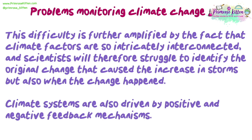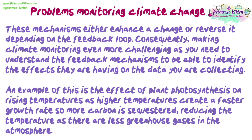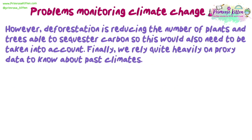Climate systems are also driven by positive and negative feedback mechanisms. These mechanisms either enhance a change or reverse it, depending on the feedback loop — consequently making climate monitoring even more challenging, as you need to be able to understand the feedback mechanisms to identify the effects they are having on the data you are collecting. An example is the effect of plant photosynthesis on rising temperatures: higher temperatures create a faster growth rate so more carbon is sequestered, reducing the temperature as there are fewer greenhouse gases in the atmosphere. However, deforestation is reducing the number of plants and trees able to sequester carbon, so this would also need to be taken into account.